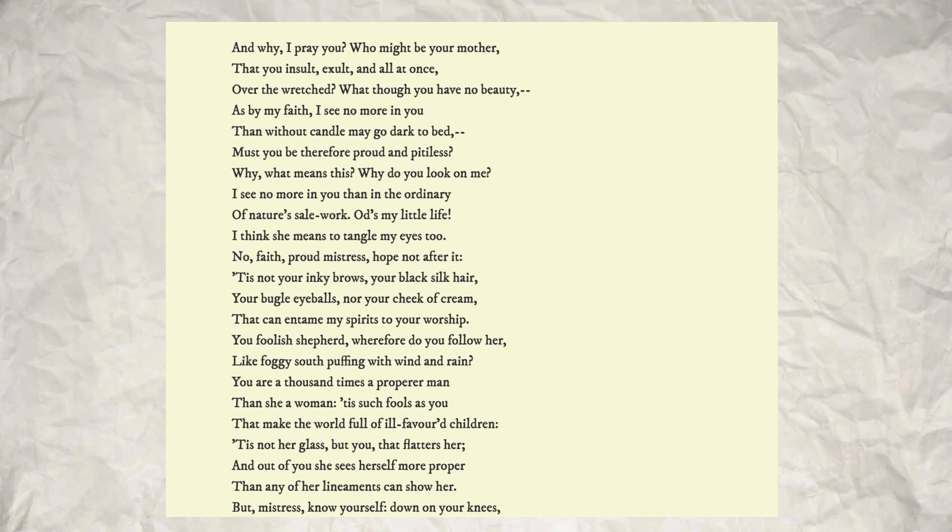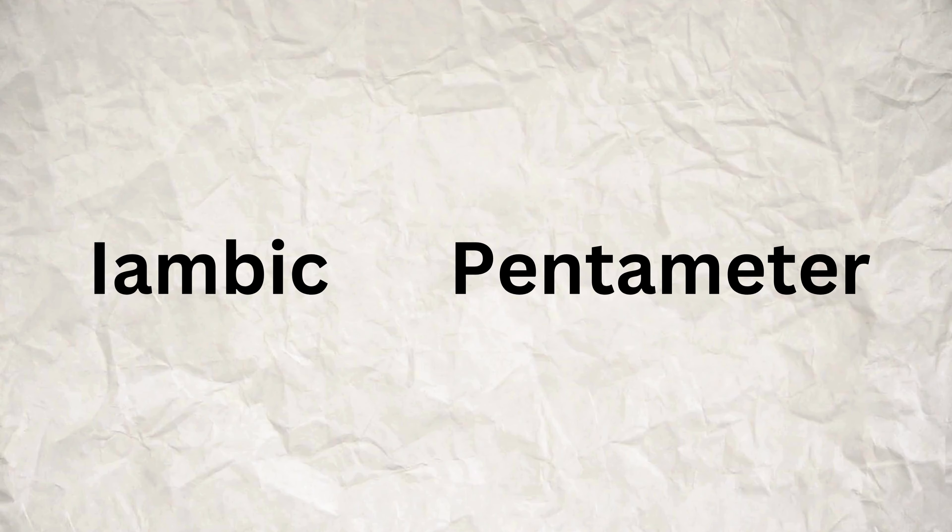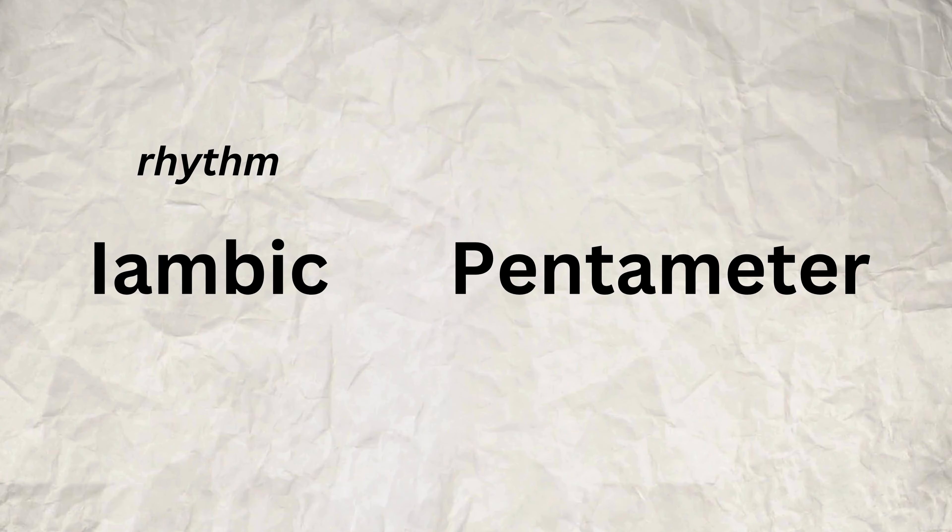Verse is a lot more structured. At a glance, it looks just like poetry, which is exactly what it is. It's regimented, neat and tidy, and it looks like the sentences are broken up over several lines. Verse comes in lots of different forms, but for the classical text that actors will be working with, iambic pentameter rules the roost. So we're going to focus purely on that. Iambic refers to the rhythm; pentameter refers to the meter.